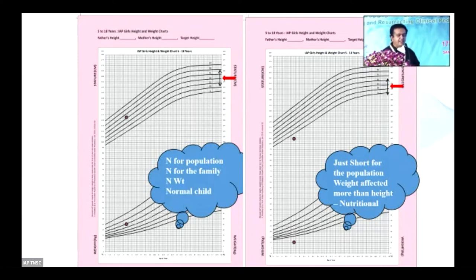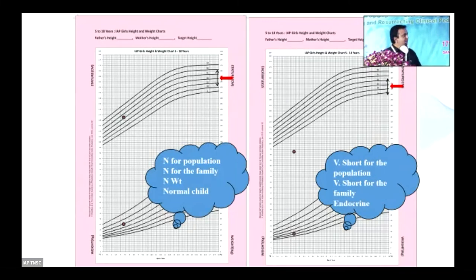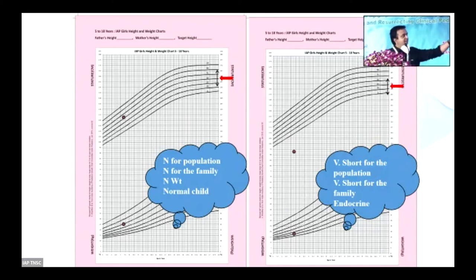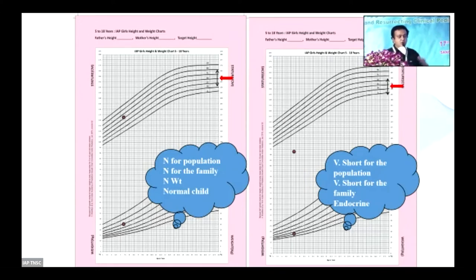Whenever weight is affected much more than height, caloric deprivation — either due to systemic disease or primary nutritional disorder — is the culprit. However, when the reverse is true and the child is very short but weight is relatively preserved, with height affected much more than weight, the culprit is probably an endocrine disorder. That is the first clue from the growth chart.